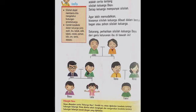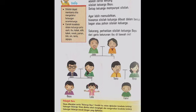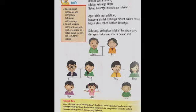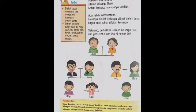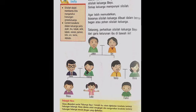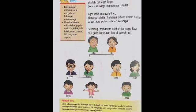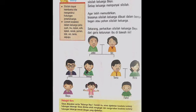Contoh kosa kata dalam keluarga yaitu: Ayah, Ibu, Kakak, Adik, Kakek, Nenek, Paman, Bibi, Om, Tante, dan Sepupu. Sekarang perhatikan silsilah keluarga Bayu dari garis keturunan ibu di bawah ini.